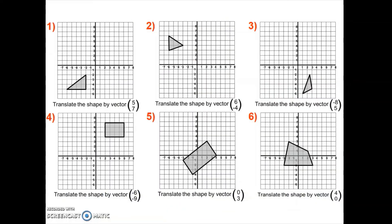I'm going to work through another six questions as examples to show you how you should approach each question. If you already fully understand how to translate shapes from my first two examples, feel free to jump ahead in the video and have a go at some tasks yourself. For question one, because of the vector, we are going to go five to the right and seven up for all three points on the triangle. That's going to create my new shape — my image — which I then draw in with my ruler.